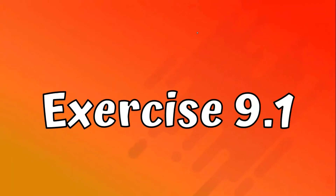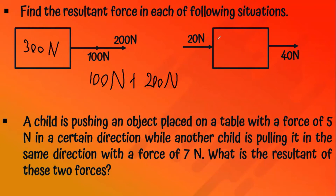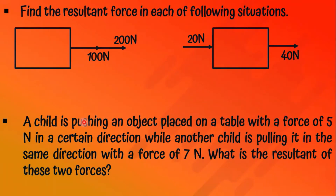Activity 9.1, question 1: the resultant is 100 N + 200 N = 300 Newtons. In the second situation: 20 N + 40 N = 60 Newtons. Question 2: a child is pushing an object with 5 Newtons while another child is pulling it in the same direction with 7 Newtons. One child pushes and the other pulls in the same direction, so 5 N + 7 N = 12 Newtons.